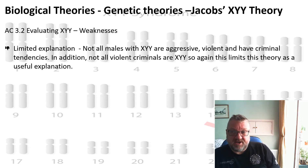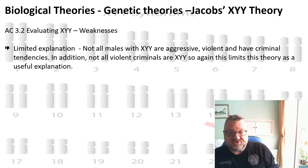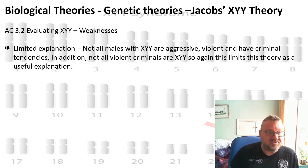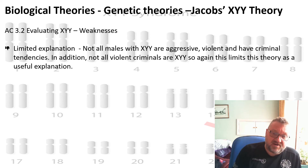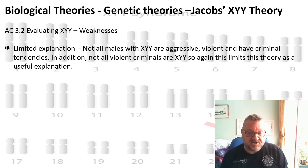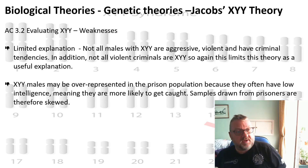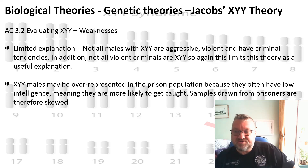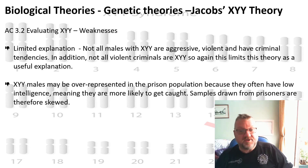XYY is a very limited explanation. Not all males with XYY are aggressive — there is no hundred percent concordance rate — and not all violent criminals are XYY. Furthermore, XYY males may be overrepresented in the prison population simply because their lower intelligence makes them more likely to get caught. Samples drawn from prisoners are therefore skewed, because those who weren't caught aren't in the sample, which would push the statistics further towards the norm.